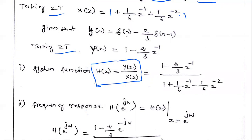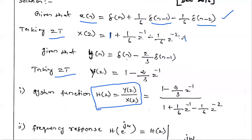Minus (2/3) times the Z-transform of δ(n−1), which is z^(−1). So Y(z) = 1 − (2/3)z^(−1). After calculating X(z) and Y(z), we have to find the system function — H(z) is the ratio of output Y(z) divided by X(z).